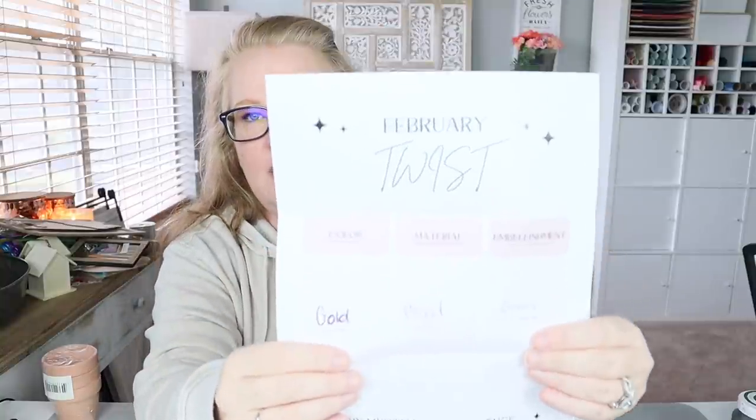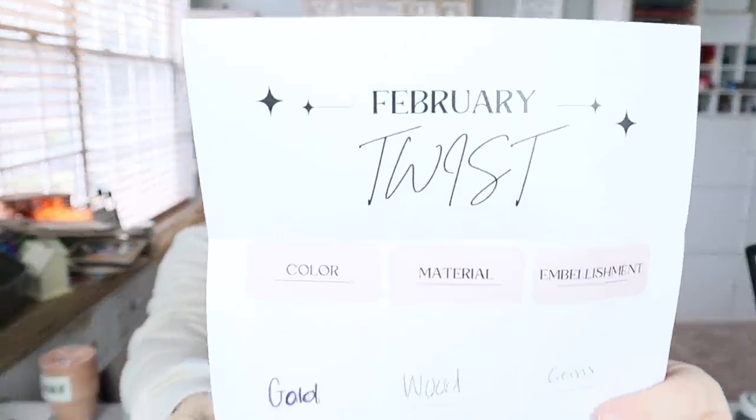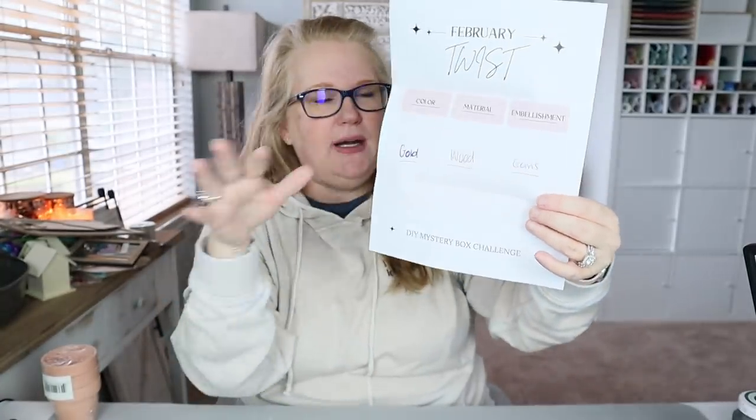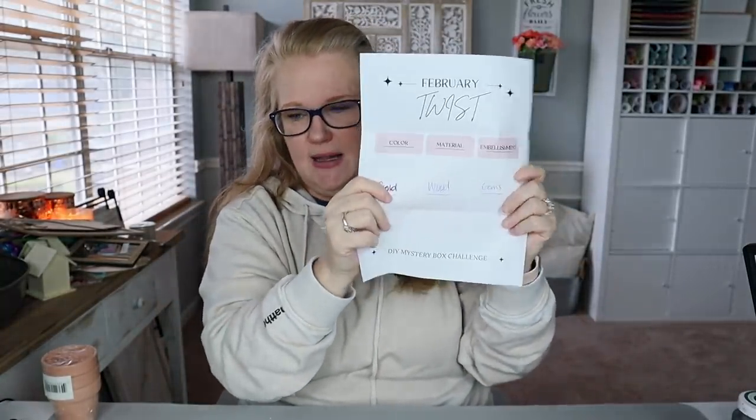So the twist was I created a form and it had three broad categories and we had to put one word in each one and we have to work those into our DIYs. So the three categories were color, material, and embellishment. Okay. So for color, she chose gold. For material, wood, and embellishment, gems. Okay. So that's kind of what the form was that I made and what it looked like and what she wrote down. So we can do it all in one DIY. We can spread it out, but this is our twist. We have to work these elements into it.